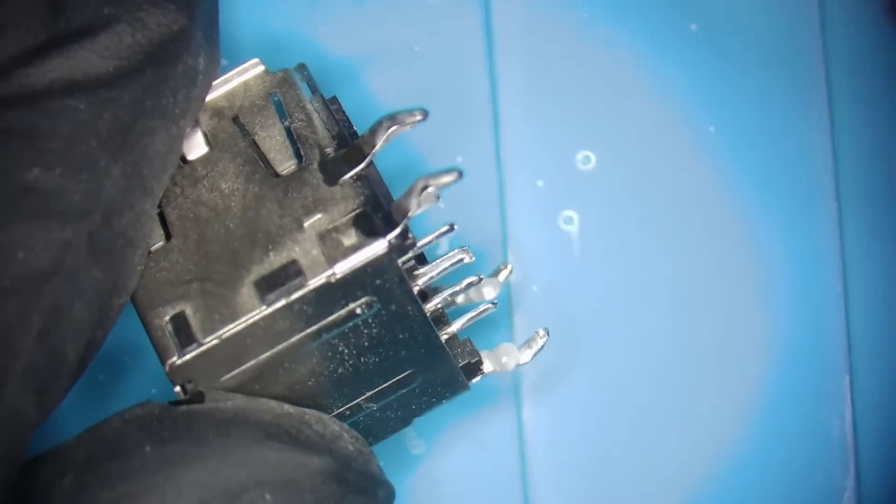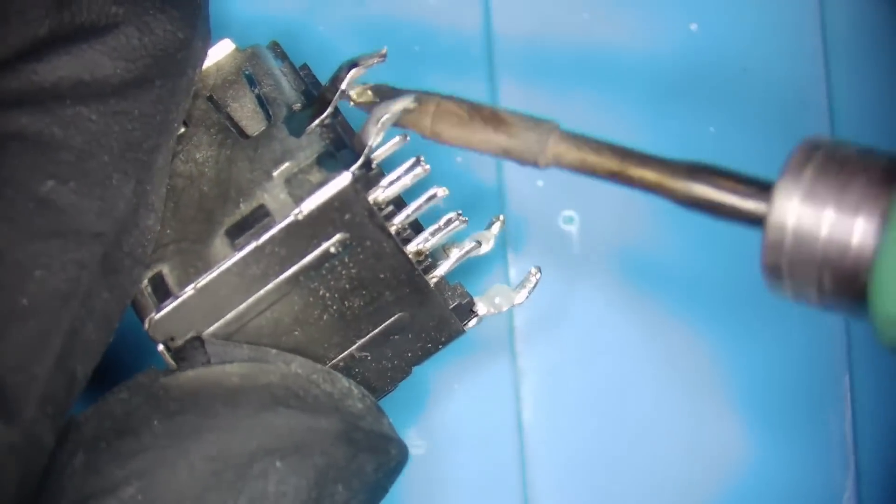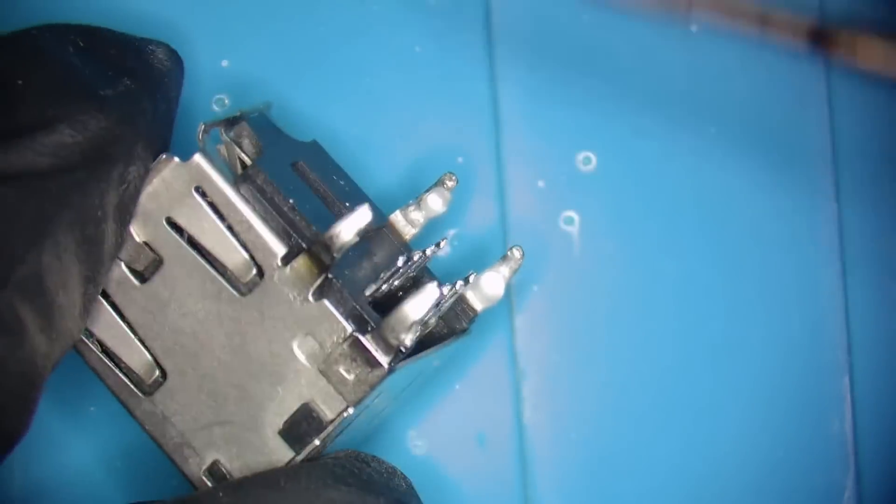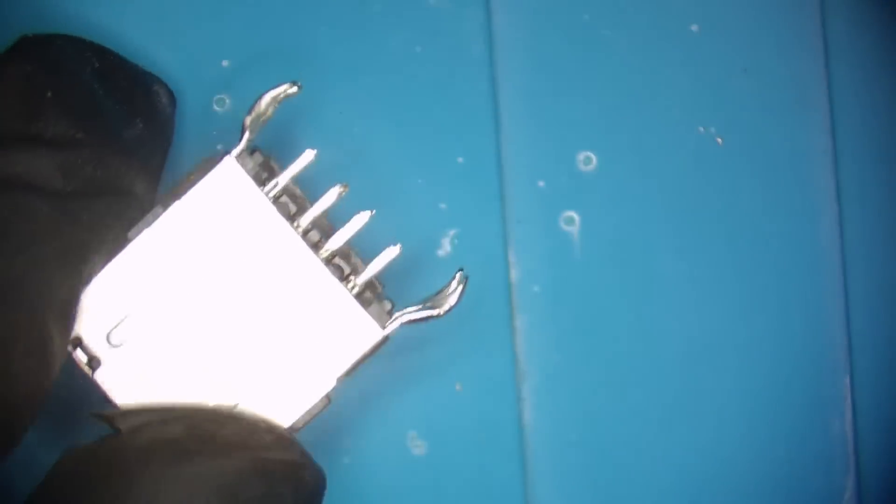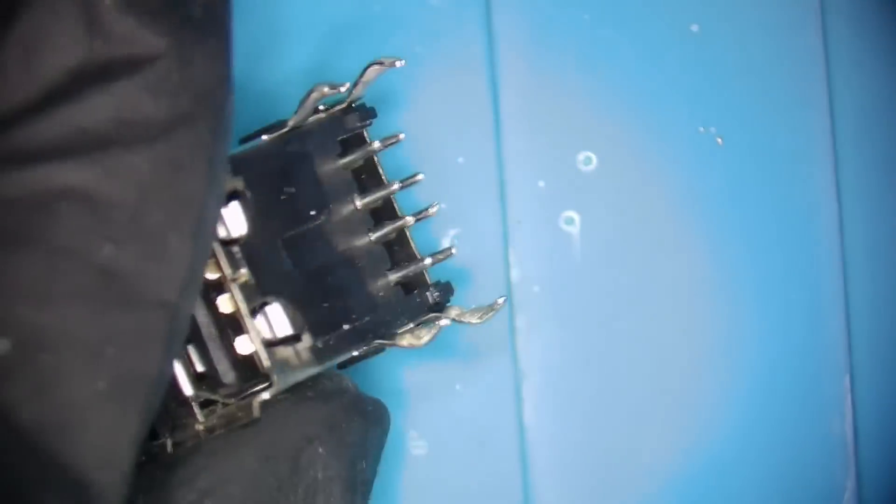In our case, there is excess tin on the bigger pins used to secure the connector to the board. So I'm applying some flux and using my soldering iron set to 360 degrees Celsius to clean the excess.